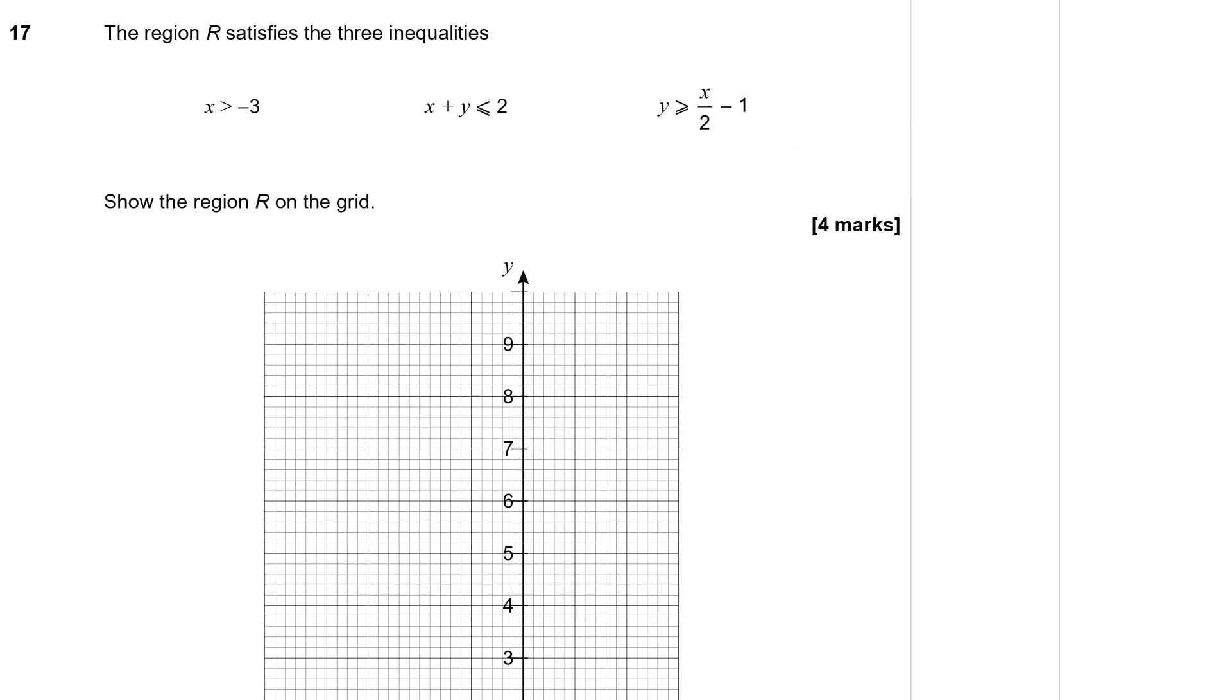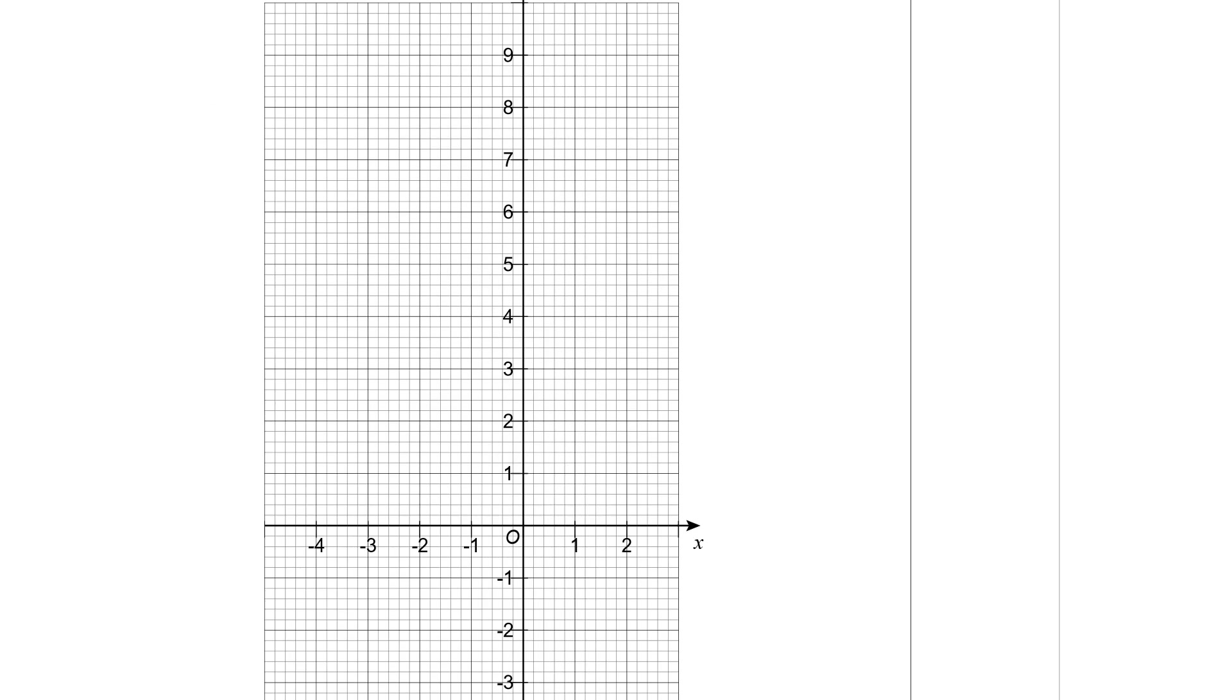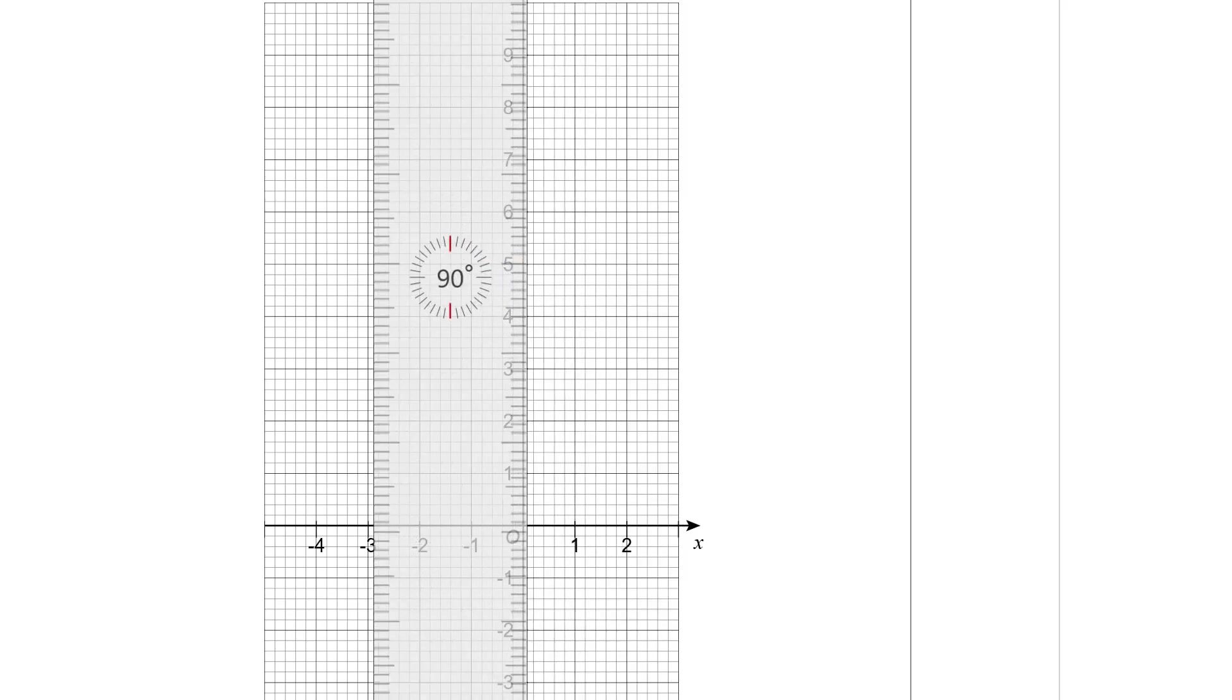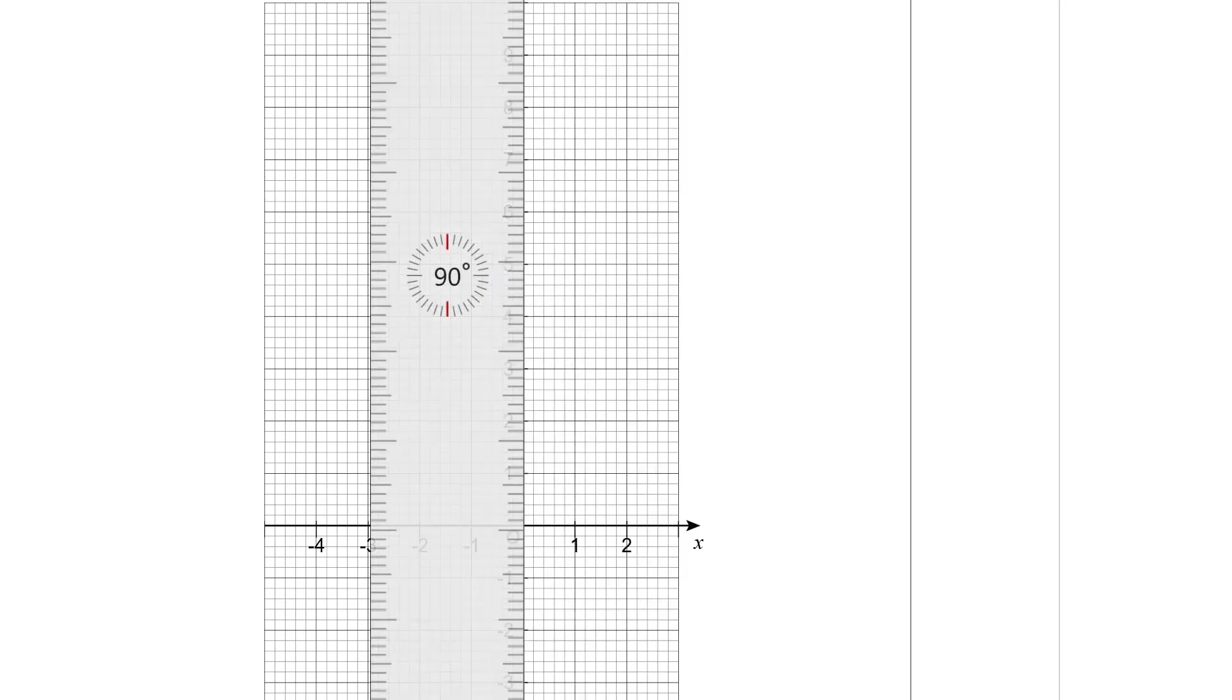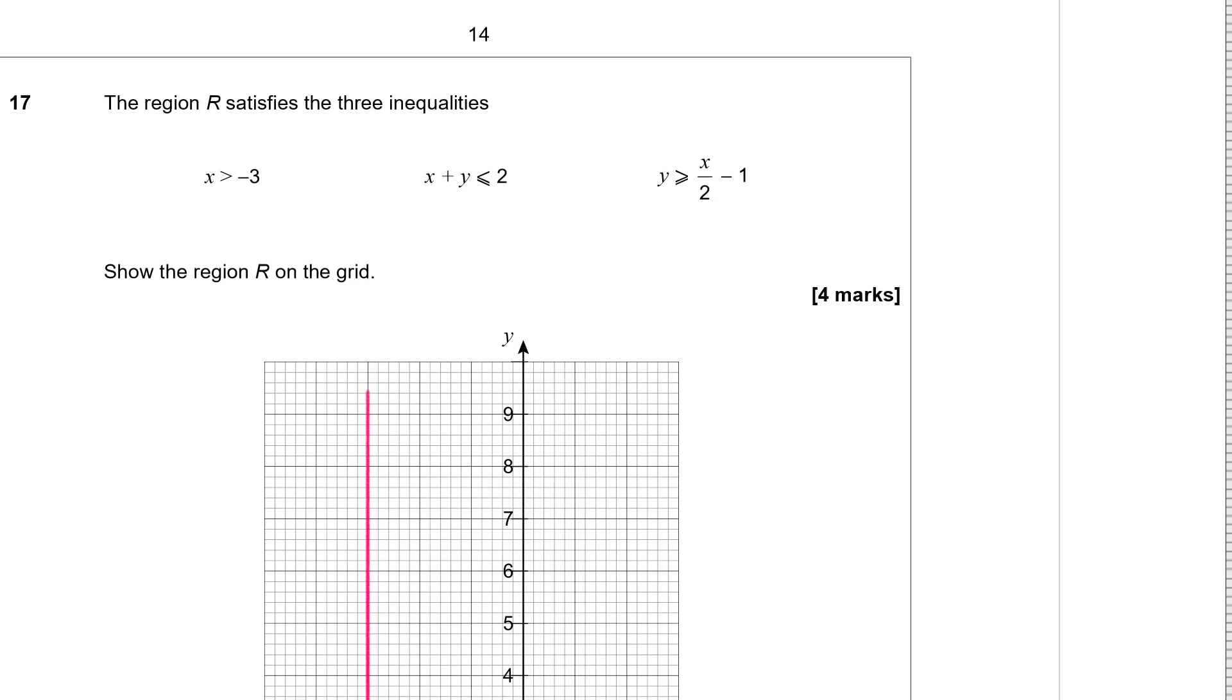In question 17 we're given three inequalities and we're asked to find the region R which satisfies all three of them. So we're going to have to draw these three lines on the graph and then see what's in the middle of them all. So x is greater than minus 3. Well the line x equals negative 3 is a vertical line through minus 3. So getting a ruler out and putting it on graph at minus 3. Let's draw that on.